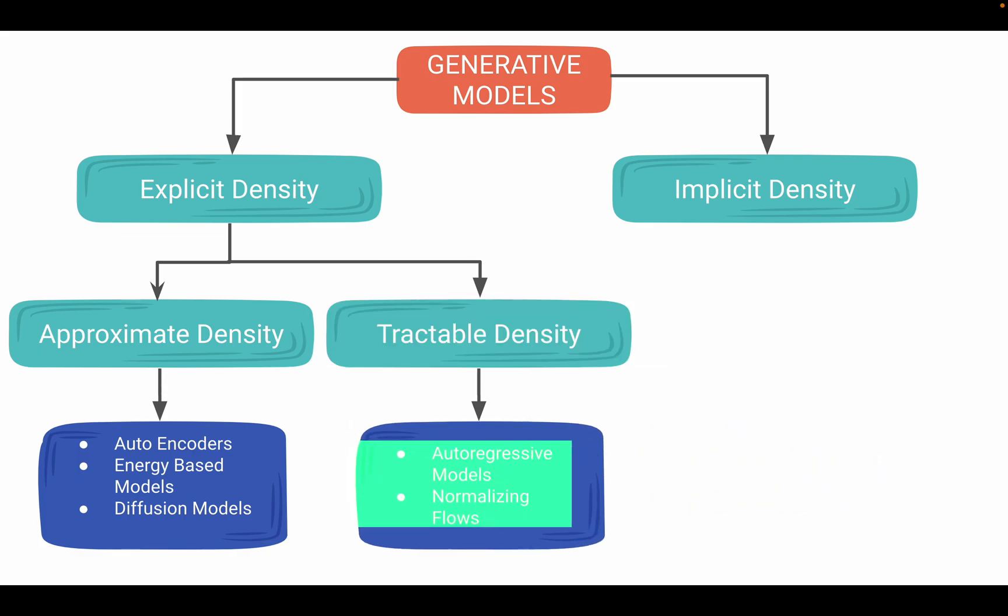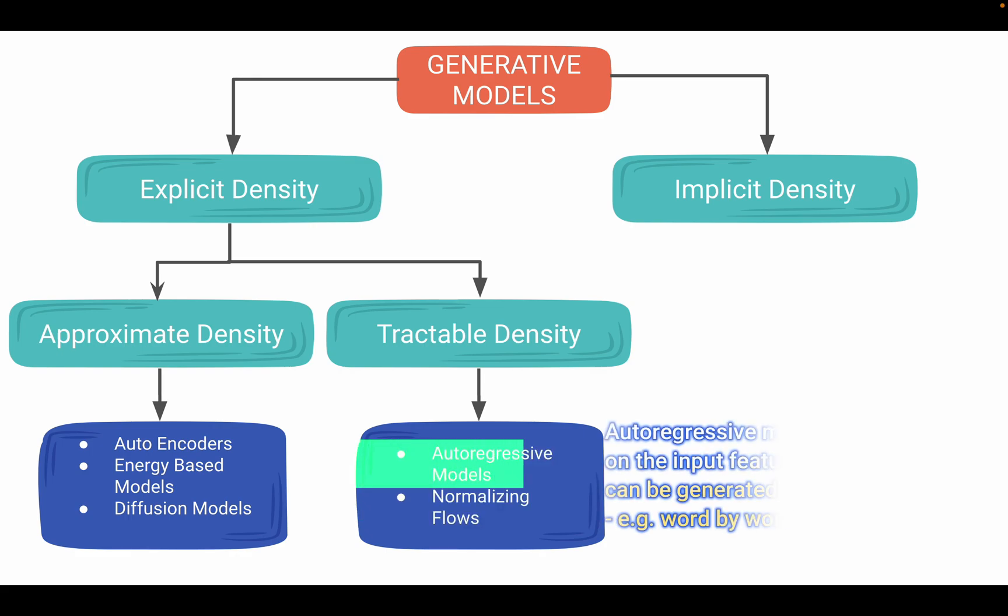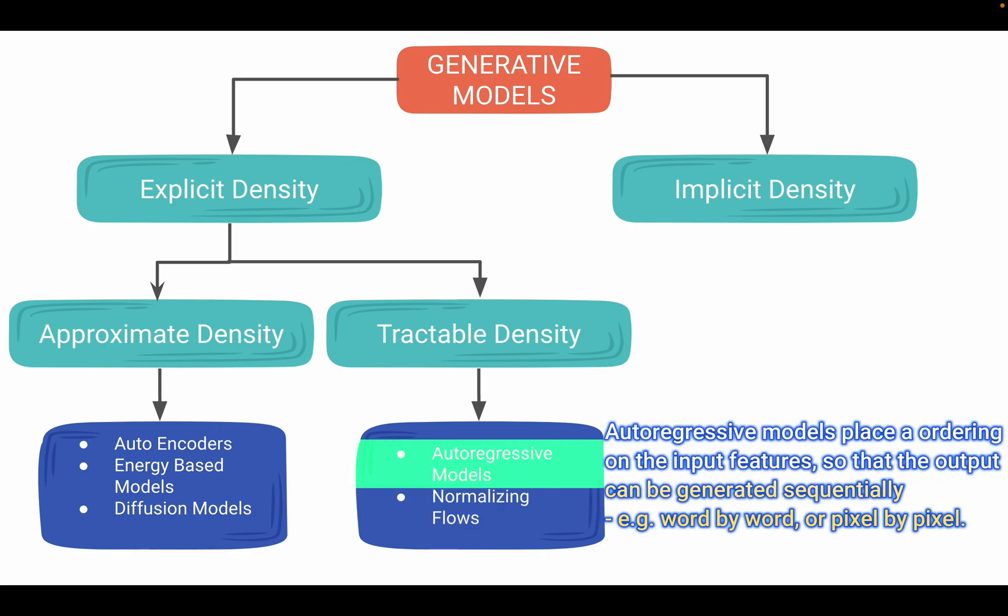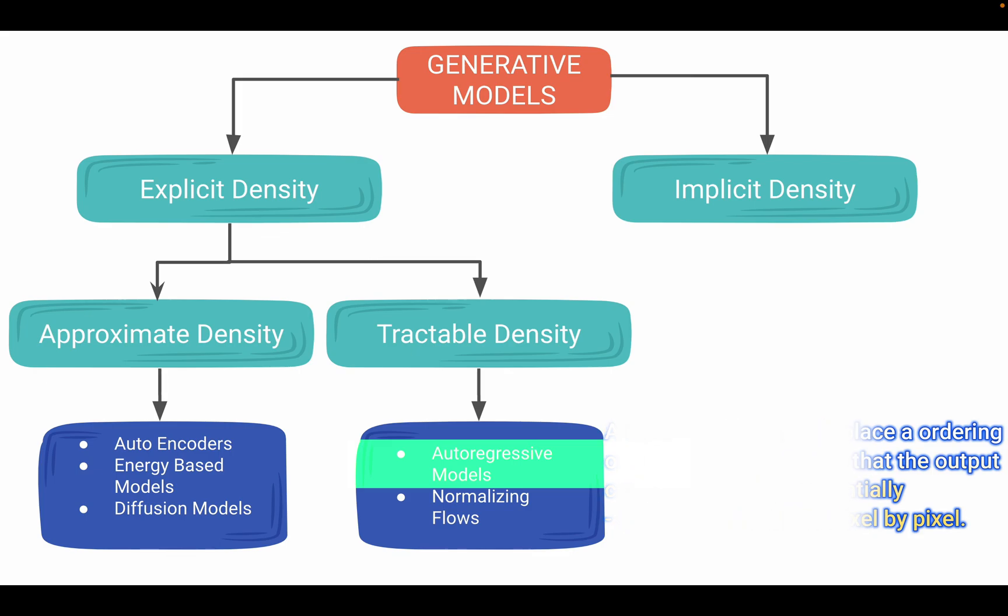In tractable density models, we have autoregressive models and normalizing flows. Autoregressive models place ordering on input features so that output can be generated sequentially, for example word by word in text generation or pixel by pixel in image generation.